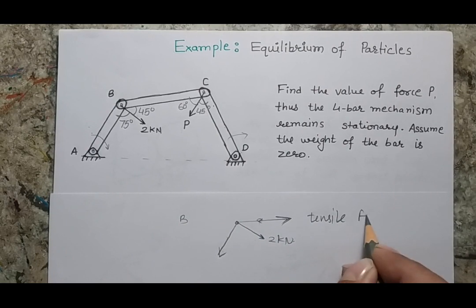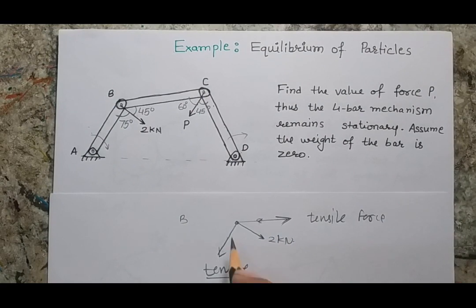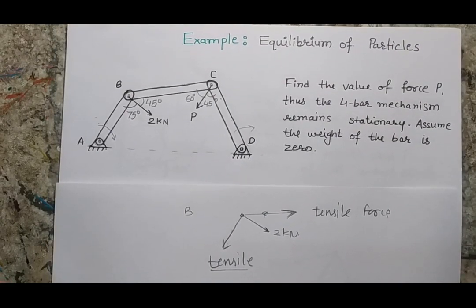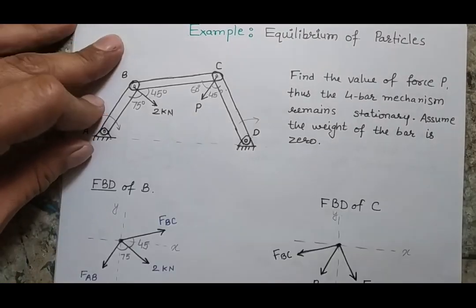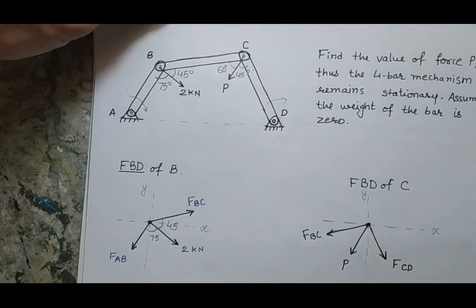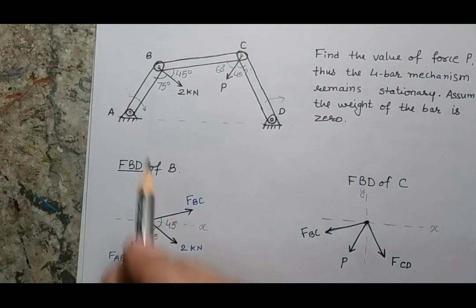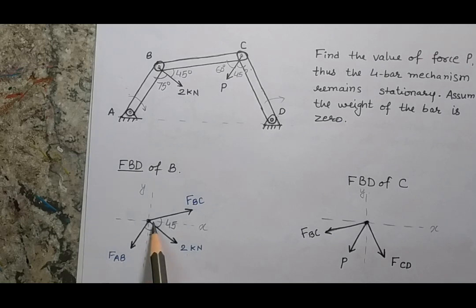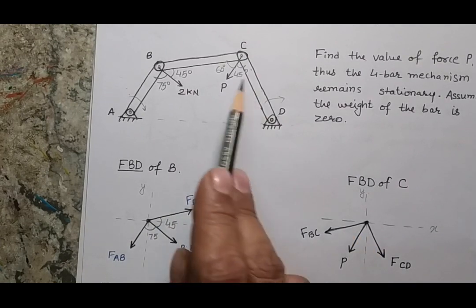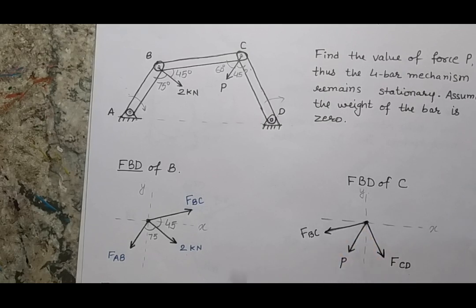I consider both forces of tensile nature. When writing the equilibrium equation, if the answer is positive the assumed direction is correct; otherwise the direction is opposite. Here is the first free body diagram of point B: the 2 kilonewton force, unknown F_AB, and unknown F_BC. The second free body diagram is of point C with force P, force BC, and force CD.